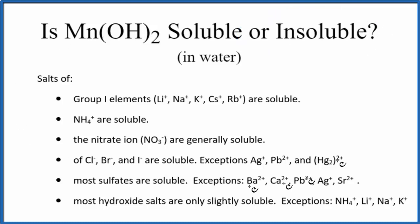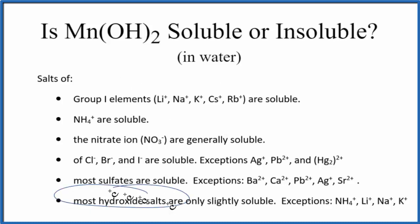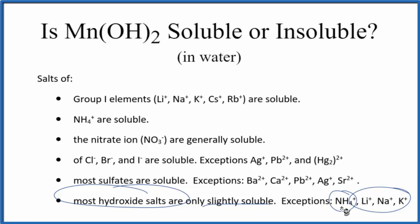Looking at this set of solubility rules — a condensed set — we go down and find that most hydroxide salts are only slightly soluble in water. There are some exceptions: salts from Group 1 on the periodic table and the ammonium ion are soluble, but most all of the hydroxide salts are only slightly soluble.